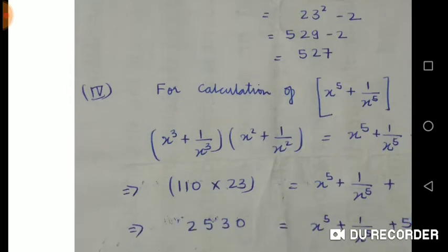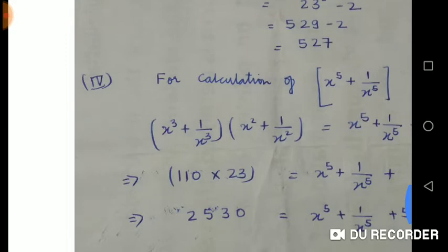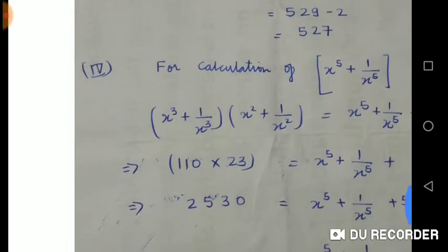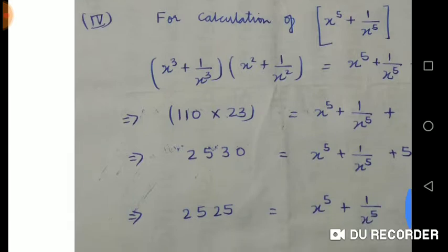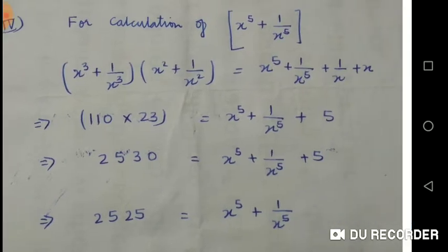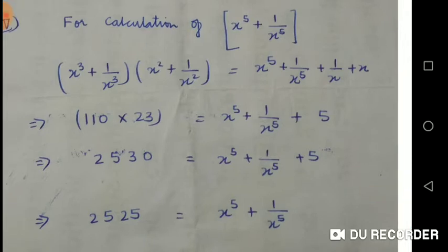Now in the higher odds, let's see how to calculate, especially the odd ones. So it is x⁵ + 1/x⁵. What I have done for that calculation: I took two expressions, x³ + 1/x³ and x² + 1/x². What will it give me? x⁵ + 1/x⁵ + 1/x + x.